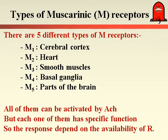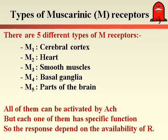Muscarinic receptors are of different types: M1, M2, M3, M4, and M5. Each is present specifically in certain organs. M1 is present in the subcortex, M2 in the heart, M3 in smooth muscle, M4 in the basal ganglia, and M5 in other parts of the brain like the substantia nigra. All these receptors are activated by acetylcholine, but each has certain functions depending on the organ. Accordingly, acetylcholine has different functions in different organs of the body according to the availability of these specific receptors.